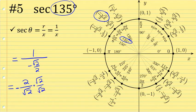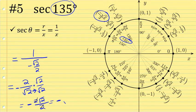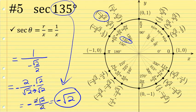Multiplying through gives negative two root two in the numerator. In the denominator, the square root of two times the square root of two is the square root of four, which is just two. The two in the numerator and the two in the denominator divide away to one, so this simplifies to negative square root of two. The secant of 135 degrees is negative √2.